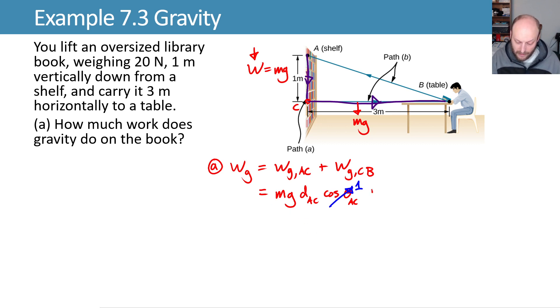We can then add on Mg D_CB times the cosine of the angle going from C to B. And now this angle is a 90 degree angle.